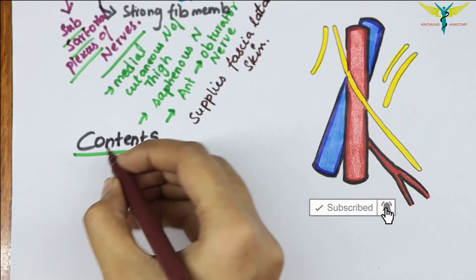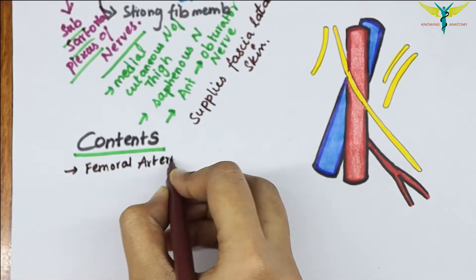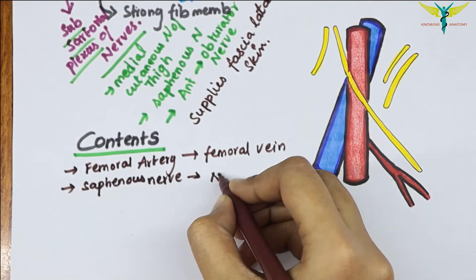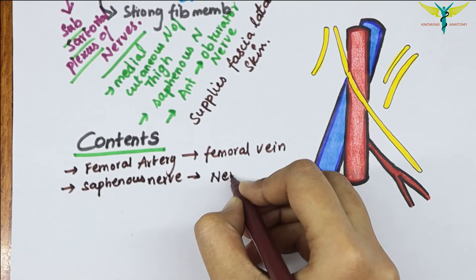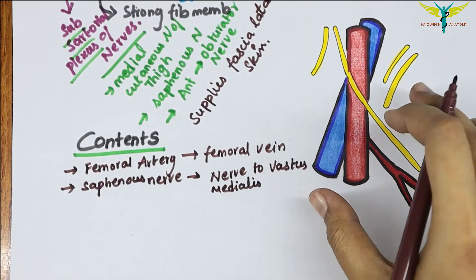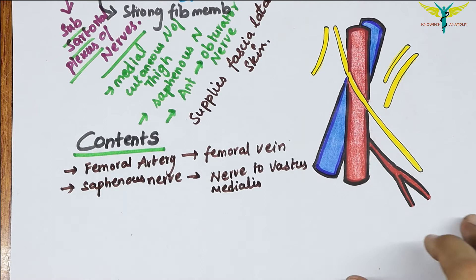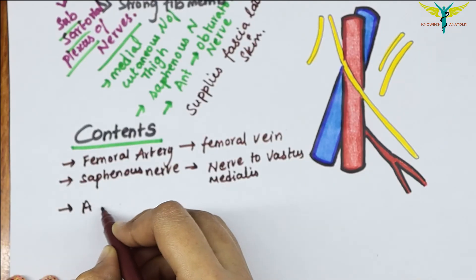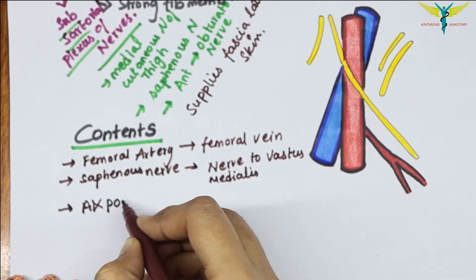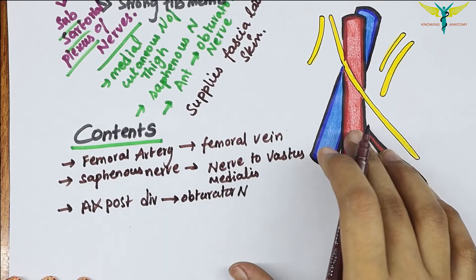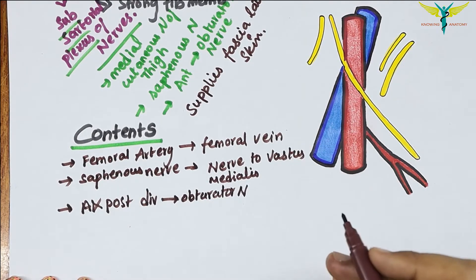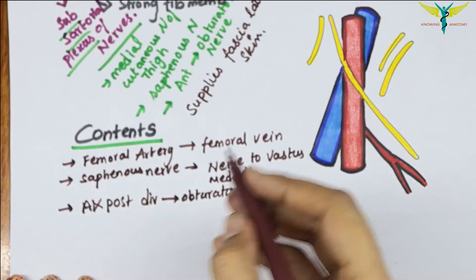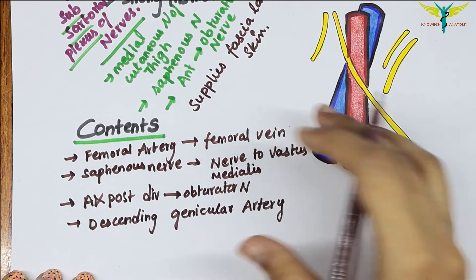The contents of the adductor canal are: the femoral artery and femoral vein, the saphenous nerve, the nerve to the vastus medialis, the anterior and posterior divisions of the obturator nerve, and the descending genicular artery — which is a branch of the femoral artery.